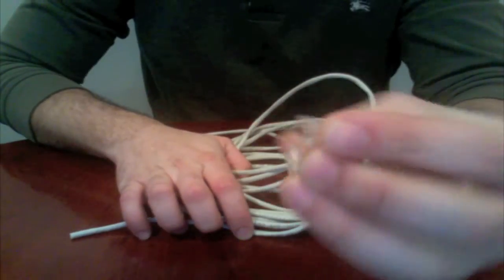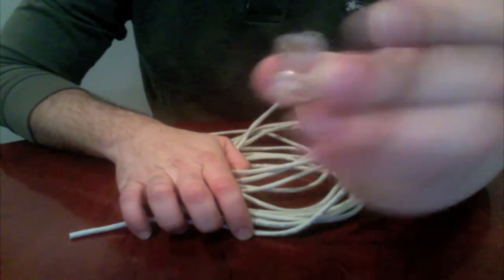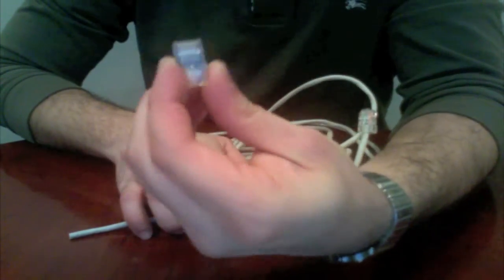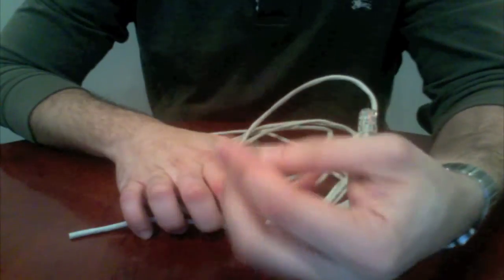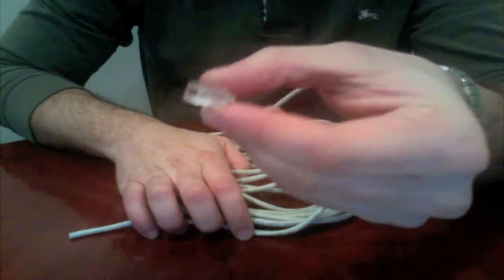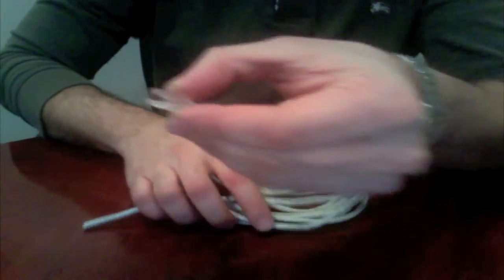Now let's take a look at the RJ45 connectors. The important thing to notice are the pins at the end. Notice that one side has a clip and the other side does not. This opening here is where we would actually insert the cable.